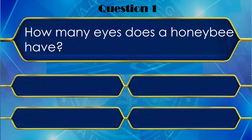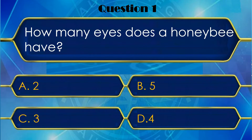And your first question is: How many eyes does a honey bee have? A honey bee ki kitni aankhen hoti hain? And your options are: A. 2, B. 5, C. 3, or D. 4?